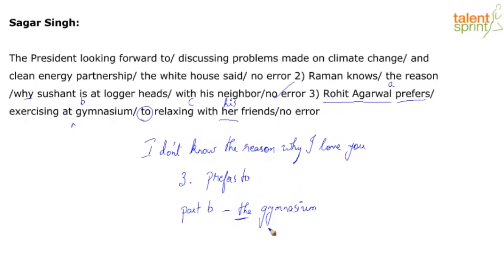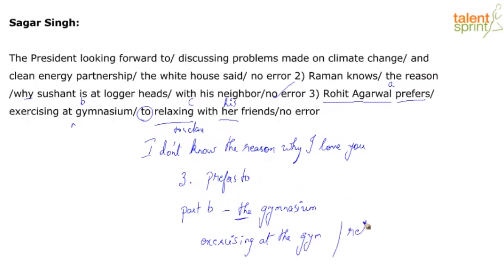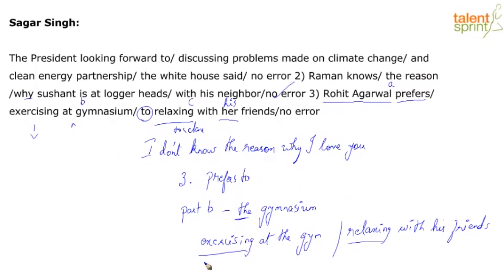Prefers to — which is fine. Relaxing with his friends. You don't have to change relaxing to relax. Why? Because there's a parallel construction with exercising at the gym and then relaxing with his friends. So there's parallel construction happening here with the ING form. There's no need to change relaxing to relax, because it doesn't say Rohit Agarwal prefers to exercise.